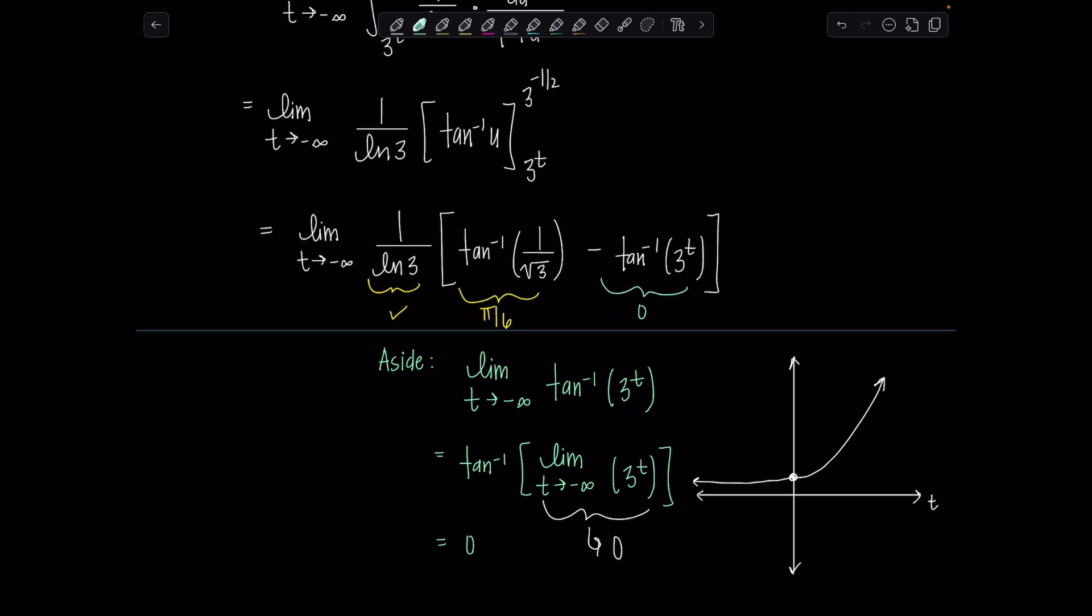So I just have one over ln of three times pi over six, and that's it. So how should we write it? Pi. Oh, that's the ugliest pi I've written in my life. Pi over six ln three. That looks better.